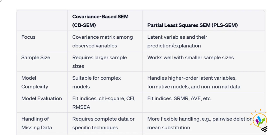The second feature is sample size. AMOS requires a large sample size, whereas Smart PLS works well with a small sample size. Covariance-based SEM typically requires a large sample size to provide stable estimation and accurate results, relying on asymptotic distribution theory to obtain reliable parameter estimation.